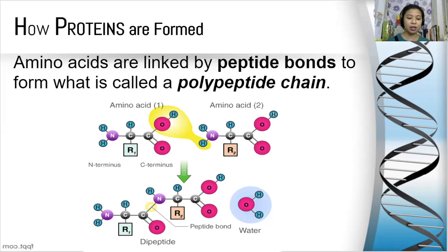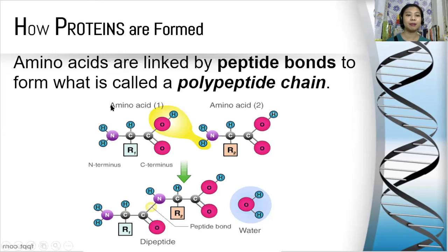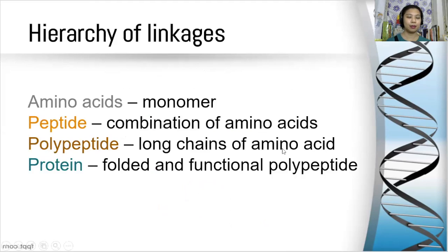Let's look at the illustration. The carbon on the carboxyl end of the first amino acid is linked to the nitrogen of the amino end of the second amino acid, giving off water (H2O), and forming the peptide bond. Remember the hierarchy of linkages: amino acids as the monomers, peptides as combinations of amino acids, polypeptides as long chains of amino acids, and proteins as the folded and functional polypeptide.